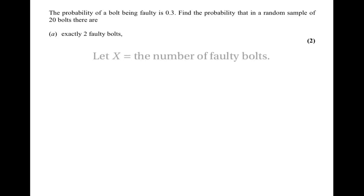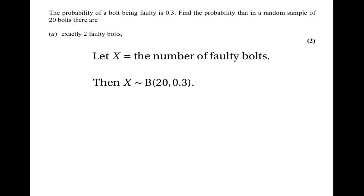The first thing is to create a random variable x, which is equal to the number of faulty bolts. We can then say that x has the binomial distribution with 20 trials and 0.3 as the probability of success — 20 trials because there are 20 bolts, and 0.3 because that's the probability of a bolt being faulty.